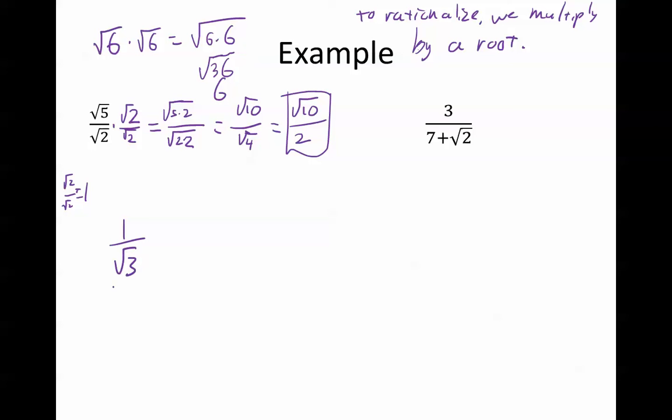Again, any time we have a root in the denominator, if we multiply by itself on top and bottom, the denominator just becomes itself. Notice, root 2 times root 2 is 2. I did some steps in between here to show you what happened, but root 2 times root 2 is 2. Root 3 times root 3 is 3. So we need to multiply it by itself.